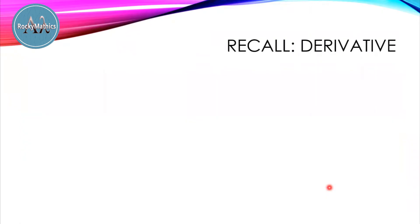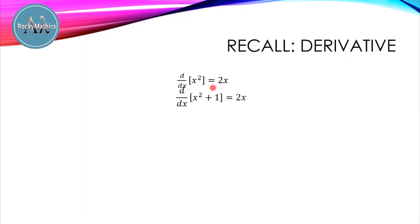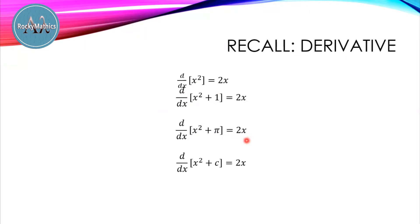To start the discussion of antiderivative or integration, we have this example. If you want to find the derivative of x squared, we know that the derivative of x squared is equal to 2x using the power rule. How about the derivative of x squared plus 1? The derivative is still 2x. How about the derivative of x squared plus pi? This is still equal to 2x. So generally speaking, if we have the function x squared plus c, where c is any constant, then the derivative is equal to 2x.